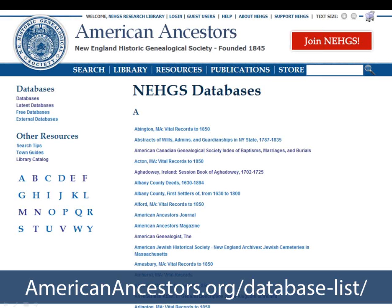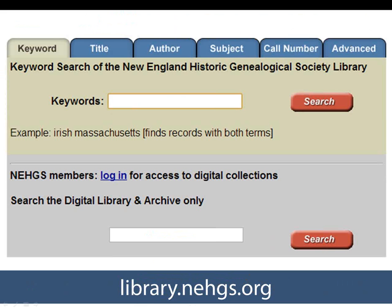You can also access an alphabetical list of all of our databases on AmericanAncestors.org — you can select any letter and browse databases that may be of interest to you. You can access our library catalog from AmericanAncestors.org, or quickly by typing library.nehgs.org. This brings up the library catalog, where a title search or keyword search for a town will provide a valuable list of resources for an individual community you're searching.